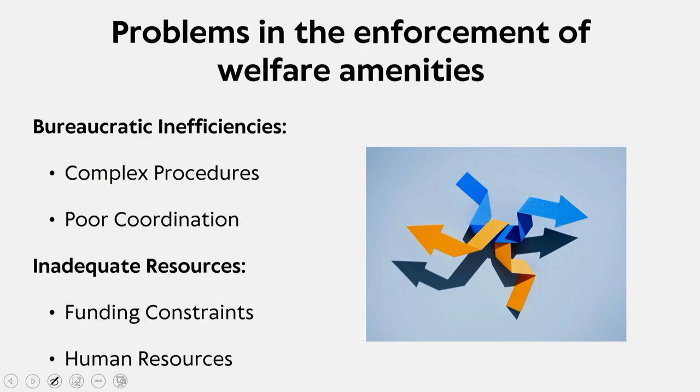When you look into the problems concerning enforcement of welfare amenities, there are certain issues of bureaucratic inefficiencies with respect to complex procedures. Many a time, there are lengthy and complicated administrative processes that can typically delay or prevent the delivery of welfare services. There are also issues of poor coordination among different government agencies which can ultimately lead to fragmented and inefficient service delivery.